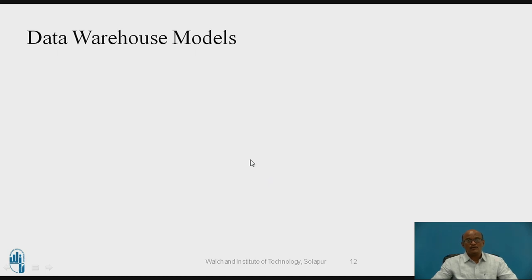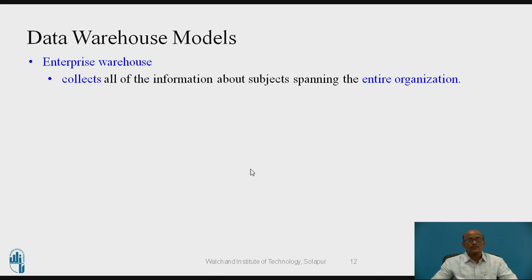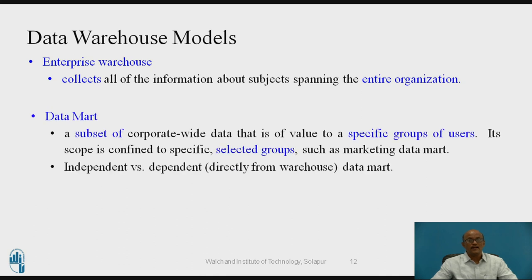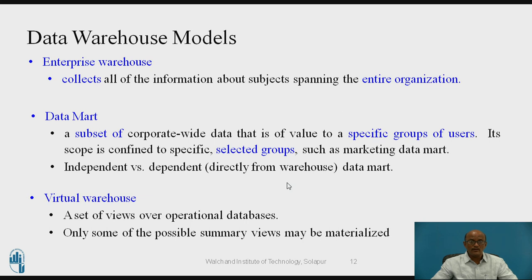Let us see the data warehouse models. There are three models. The first is the enterprise model — it collects all information about the entire organization. The second is data mart — a subset for a specific group of users or selected groups such as marketing data; it can be independent or dependent directly from warehouse data. The third is virtual warehouse — a set of views over operational databases where only some of the possible summary views may be materialized.